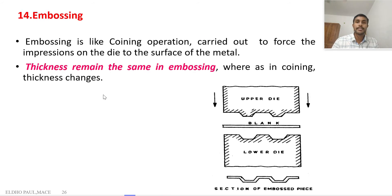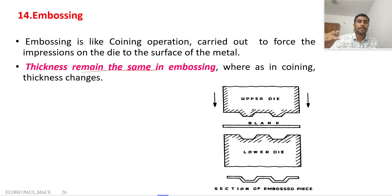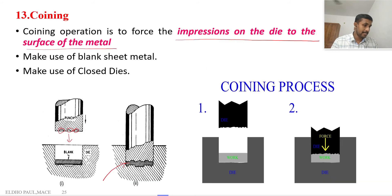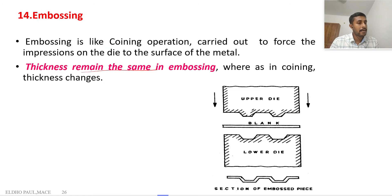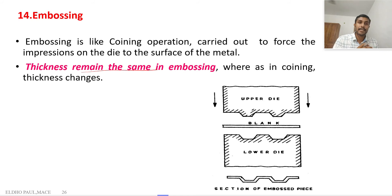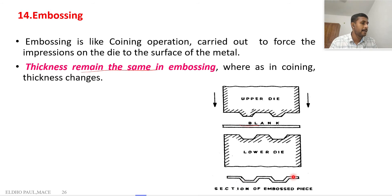The embossing process is similar to coining, but the thickness remains the same in embossing — we just bend the workpiece into the required shape. In coining, there is a change in thickness, with impressions and projections on the final product. In embossing, the final product has almost the same thickness everywhere; we do not change thickness, we just bend in different areas.